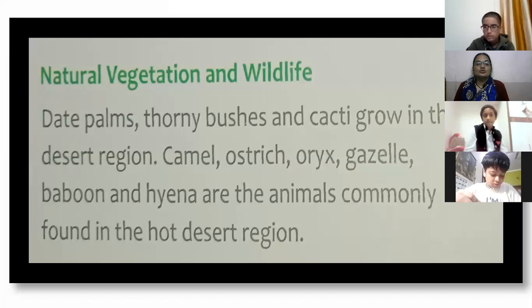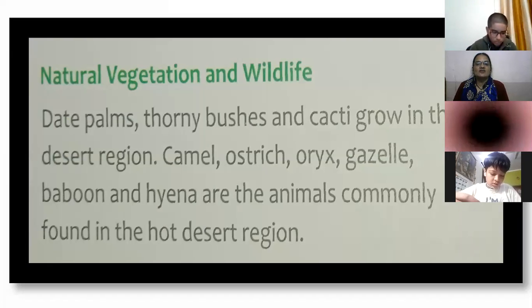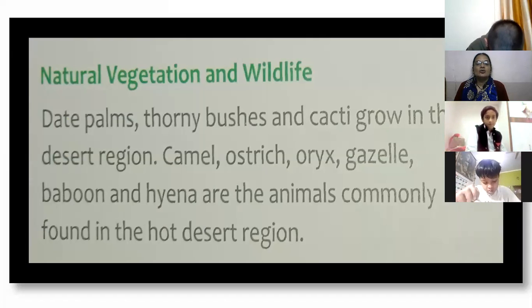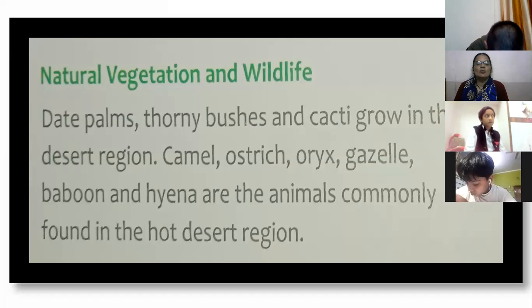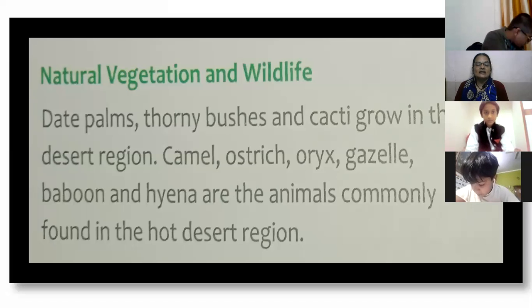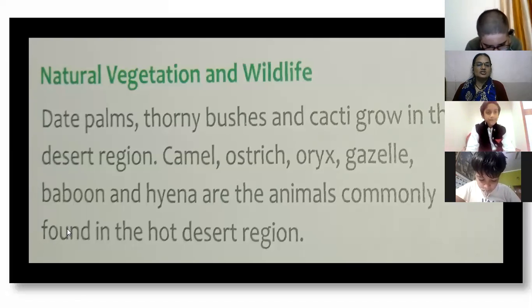Date palms, thorny bushes, and cacti grow in the desert region. Camel, oryx, gazelle, baboon, and hyena are animals commonly found in the hot desert region. Animals survive only in regions suited to their conditions.